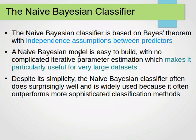We assume that our predictors are independent. What that means is knowing the value of one attribute does not tell us anything about the value of another attribute or predictor. A Naive Bayes model is usually easy to build with no complicated iterative parameter estimation, and that makes it particularly useful for very large datasets.